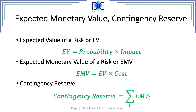Once we have the expected value, we can determine the expected monetary value by multiplying the expected value by the cost. For example, in the delay scenario, if each day of delay costs $1,000, then the expected monetary value of that delay will be equal to $6,000. On the other hand, where we already have the expected value expressed as $10,000 in monetary terms, the expected monetary value is equal to the expected value.